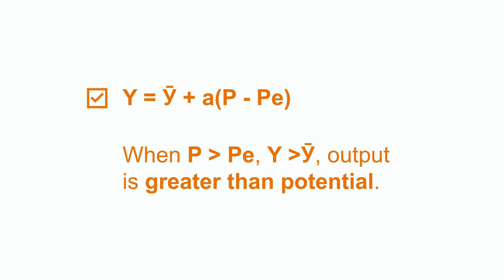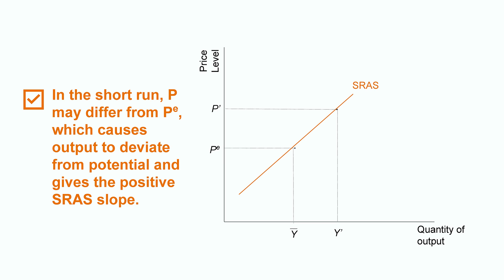When p is larger than p e, output will become greater than potential. When p is smaller than p e, output will be lower than y bar. In the short run, people may make mistakes when forecasting the price level and form incorrect expectations, or they may be locked into wages or prices that were set before they knew what the price level would actually be. Therefore, p e may differ from expected price level p e, which causes output to deviate from potential, giving us the positive slope for short run aggregate supply.